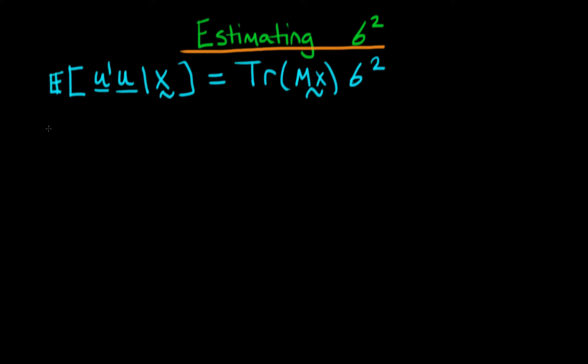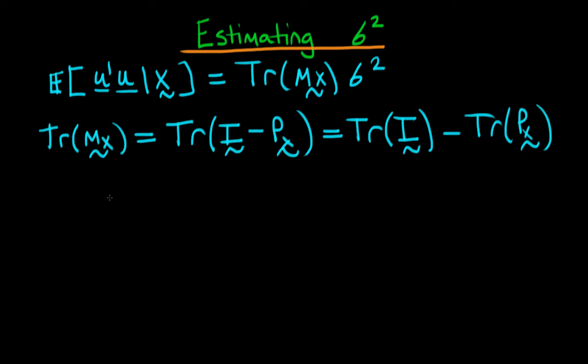So how about this quantity, the trace of mx? We know that mx is equivalent to the identity matrix minus px. Since the trace operator is linear, this equals the trace of the identity matrix minus the trace of px. The trace of the identity matrix is n because we've got n ones on the diagonal, so we're left with n minus the trace of px.